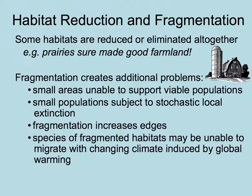When habitats are reduced and fragmented, species present go extinct. Some habitats have been totally transformed by humans — for example, most of the native prairie in the United States was turned into farmland, leaving native prairie plants, butterflies, and animals with nowhere to live. Fragmentation creates additional problems: in the small areas that remain, not enough individuals may be supported to continue the species, especially for larger animals and predators. Small populations can randomly go extinct, especially if a catastrophe befalls them. Fragmentation also increases edge habitat, which is lower-quality habitat.